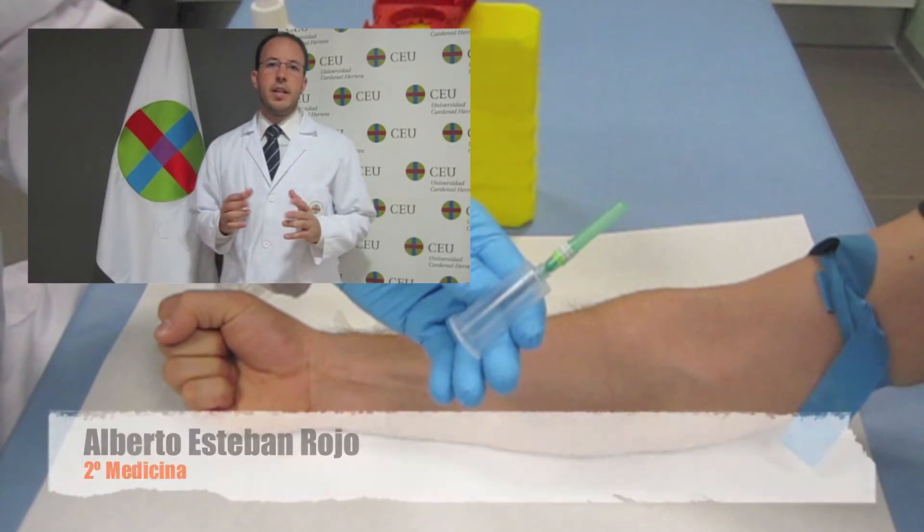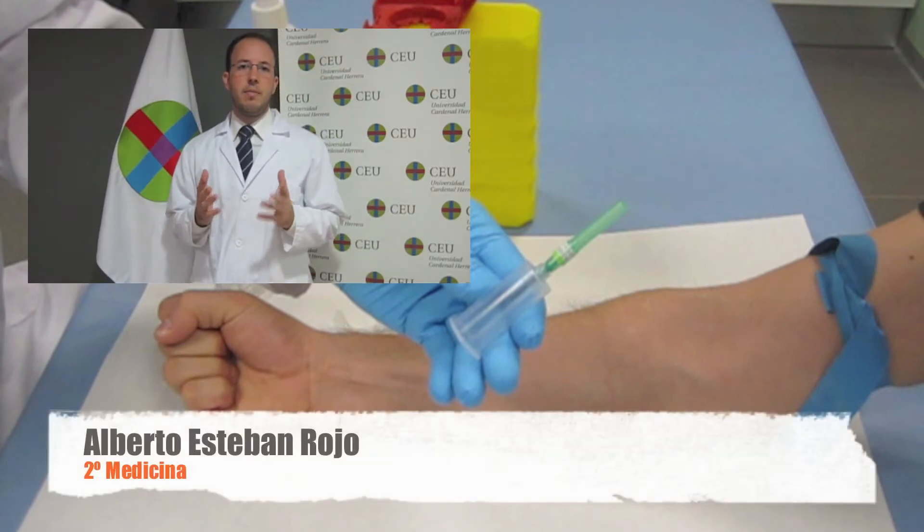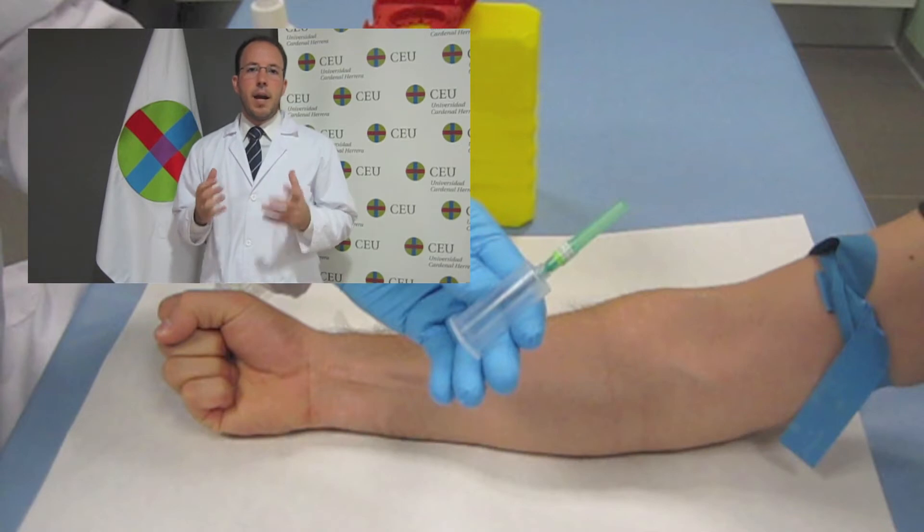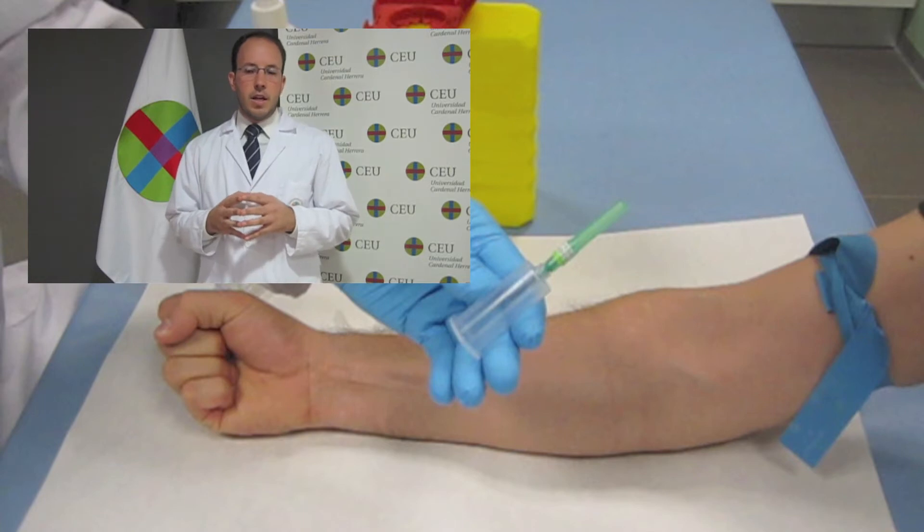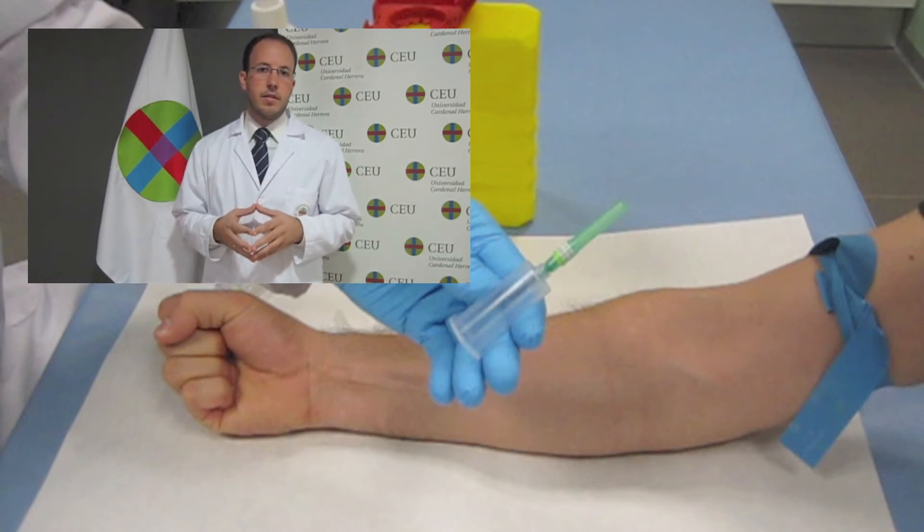Es importante la correcta elección del material cortopunzante para evitar la manipulación excesiva tanto de la muestra como de dicho material. Una vez realizada la extracción procederemos a tirar en el correspondiente contenedor dicho material para evitar accidentes.